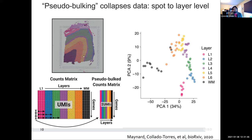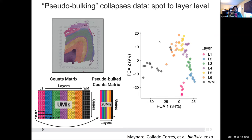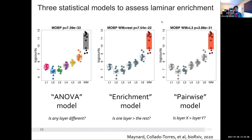Spots were assigned to layers using the Shiny app I developed, along with expertise from Kristen Maynard and information about previous marker genes. Once you assign the spots to a layer, we're able to compress the data. Looking at the compressed data on a PCA plot, we see that layers one through six are mostly explained in PC number two, which explains 9% of the variance. White matter versus neuronal layers explains around 34% of the variance. It's kind of neat to see layer one followed by layer two, then three, four, five, and six — a nice sequential pattern on the PCA plot.